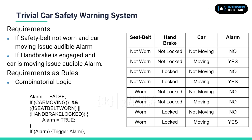We immediately see that when the car is not moving, the alarm will not be triggered irrespective of the input values. If the car is indeed moving, then we can see that the alarm is triggered as the logical OR of the seat belt not being worn and the handbrake being locked.